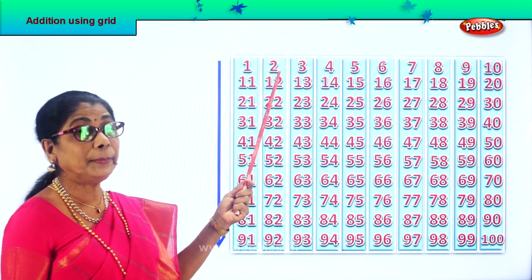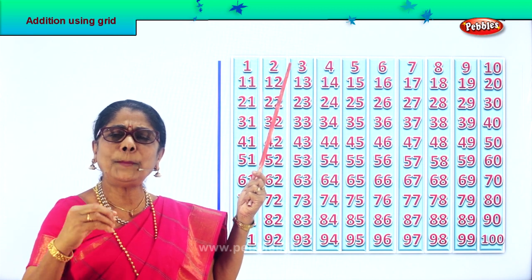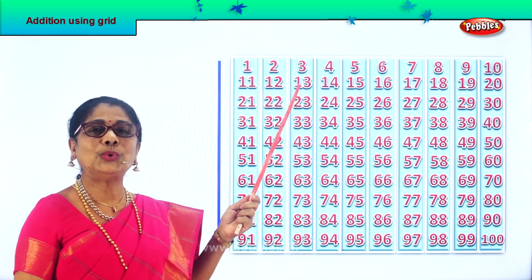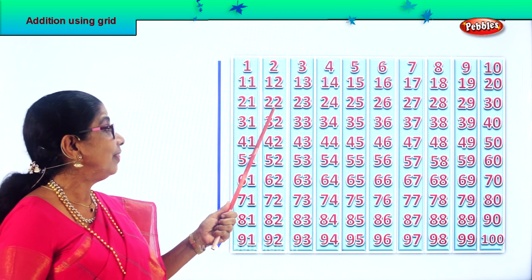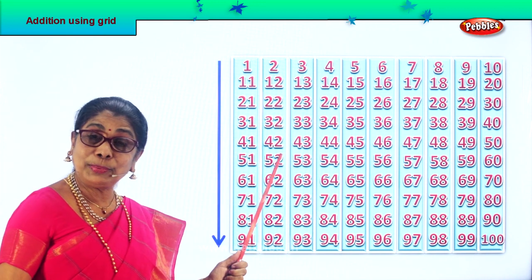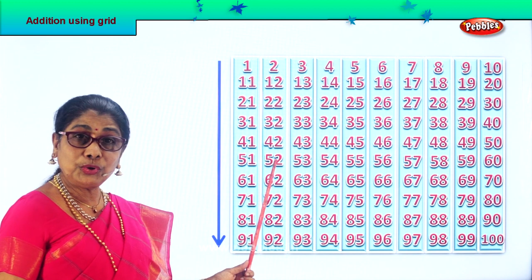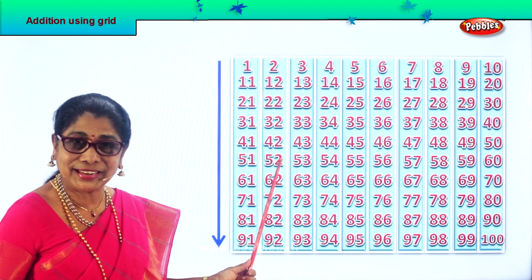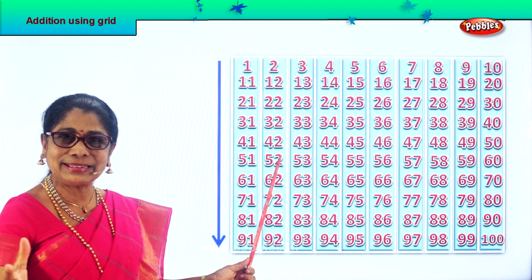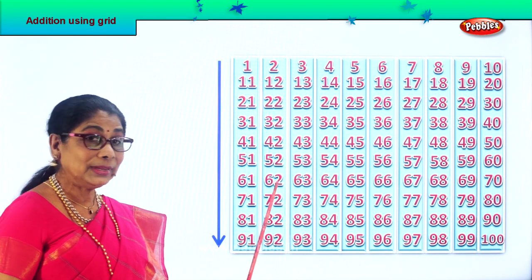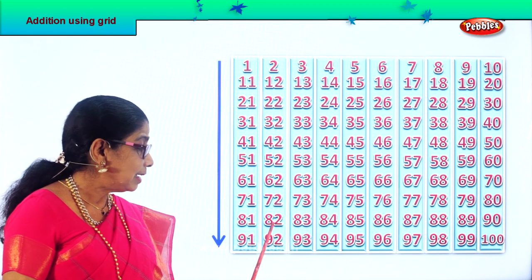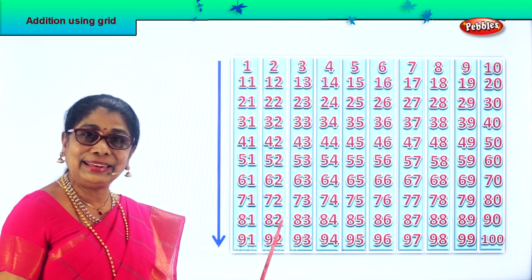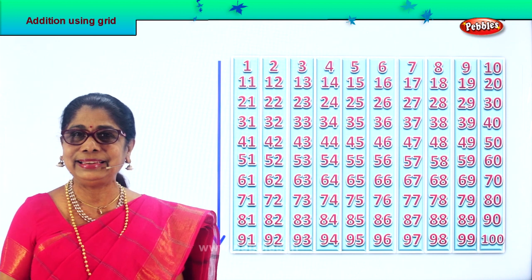Here you have number 2. 2 plus 10? 12. 12 plus 10? 22. 22 plus 10? 32. 32 plus 10? 42. 42 plus 10? 52. 52 plus 10? 62. 62 plus 10? 72. 72 plus 10? 82. 82 plus 10? 92.